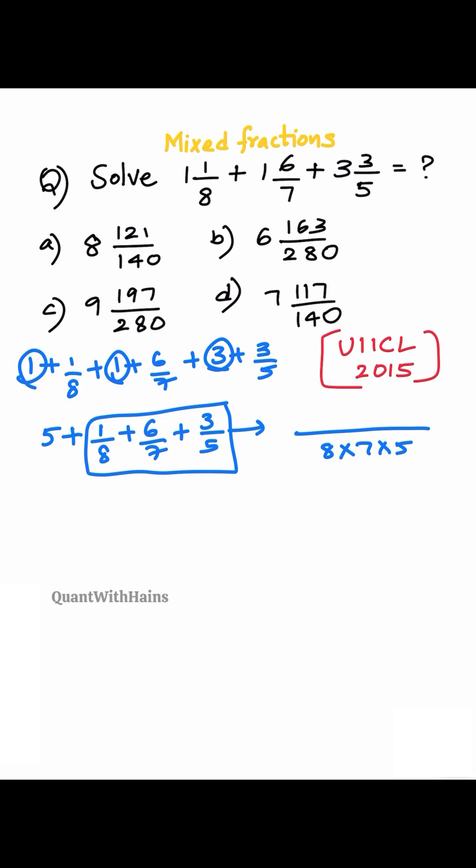Numerator 1 is 0, so left over is 7 into 5 plus numerator 6. Denominator 8 into 5 plus 3 times 8 into 7.